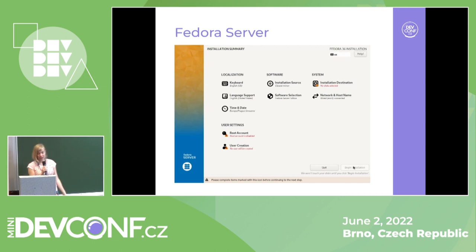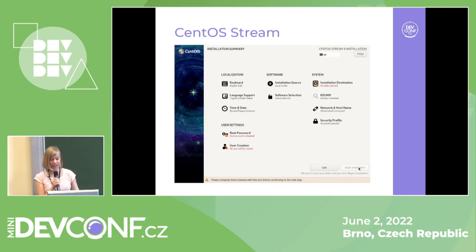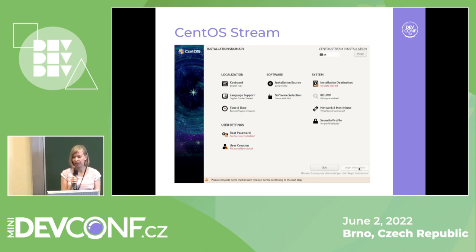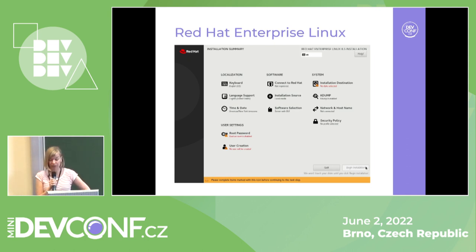Fedora Server doesn't have this option because it doesn't necessarily install a graphical system. So all configuration happens during the installation, so there are some additional screens. Then CentOS Stream shows all available add-ons that we currently have. And for RHEL, we have additional support for Red Hat subscriptions, so that's another screen.